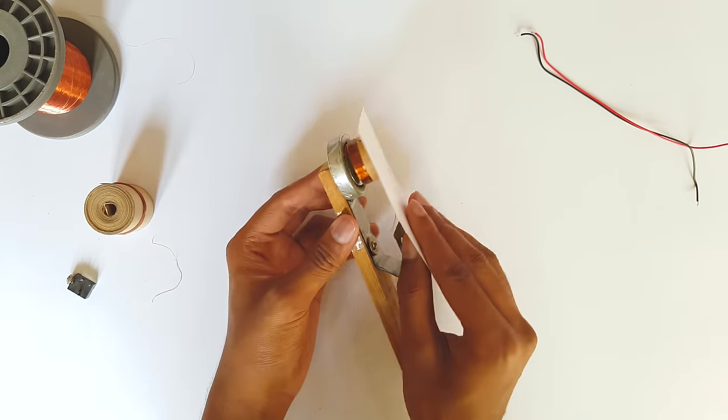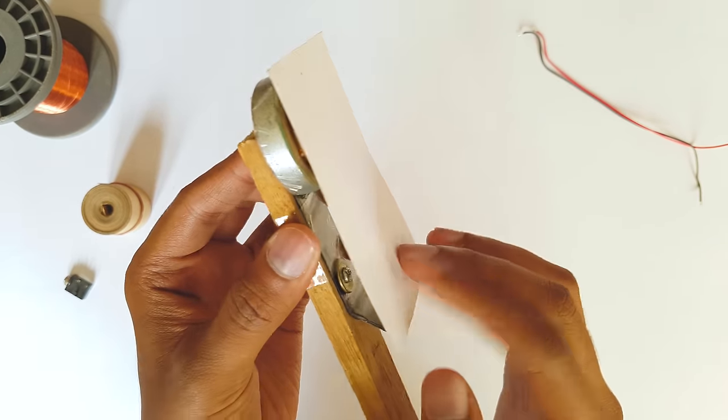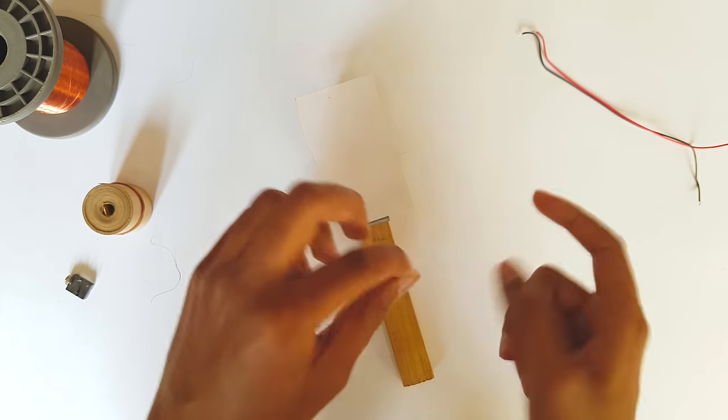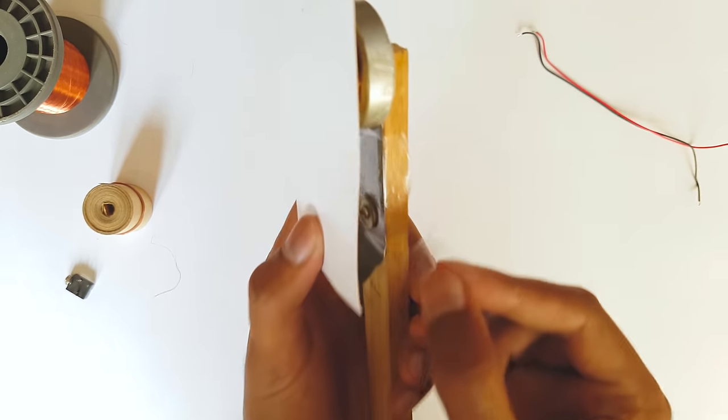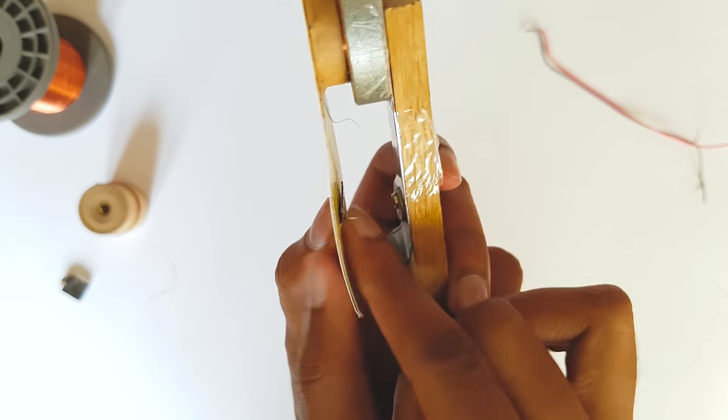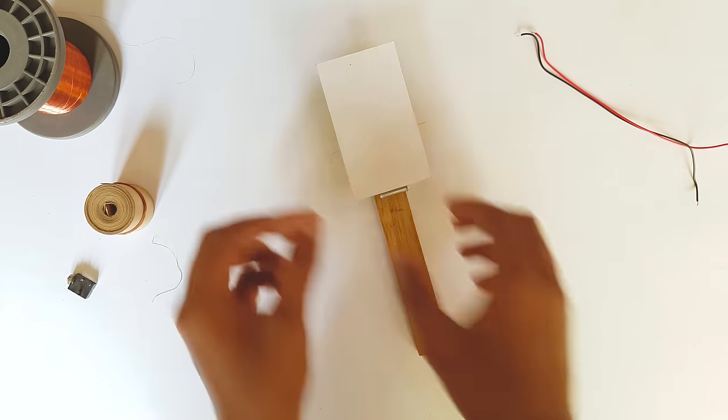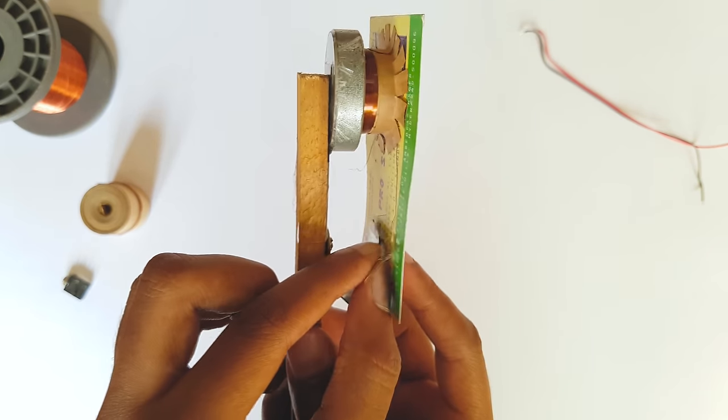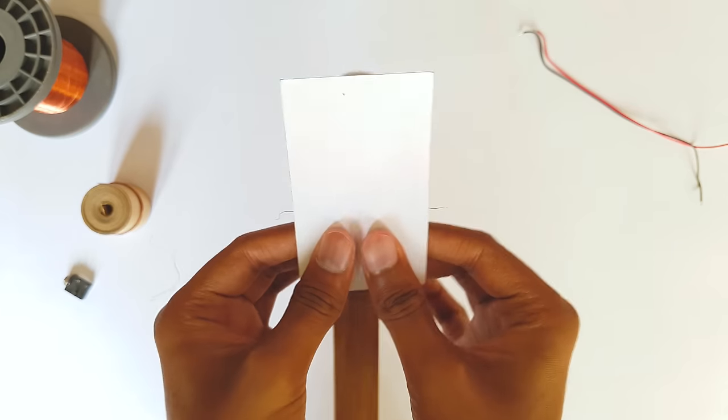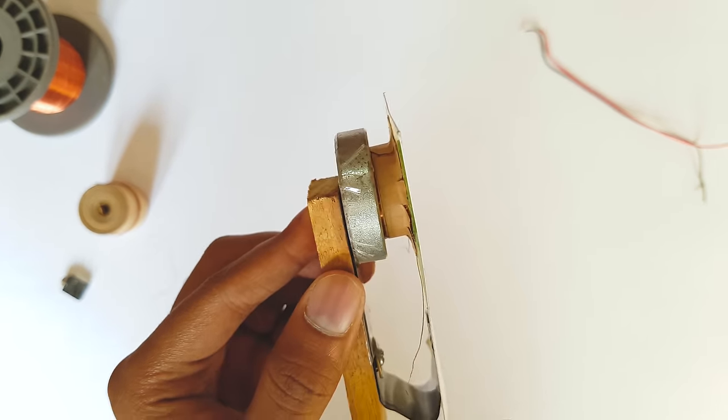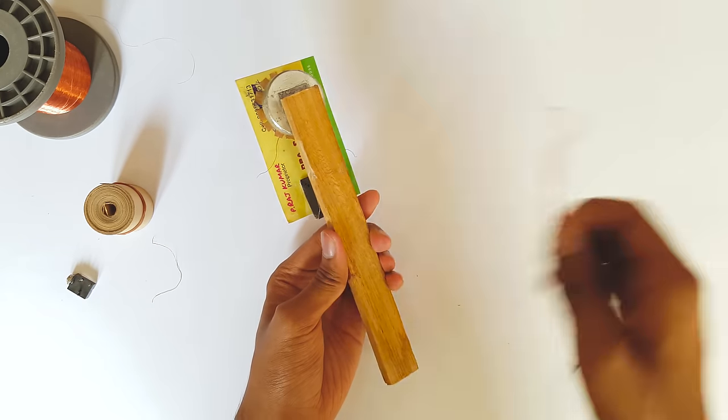Now we need to fix the diaphragm over the magnet and we need to align the coil in its correct position. Use pieces of tape and attach the diaphragm to the metal strip. It is very easy to do this guys, just watch carefully.